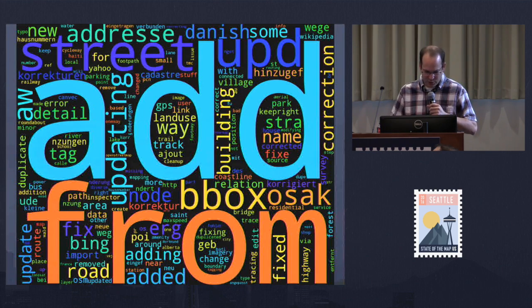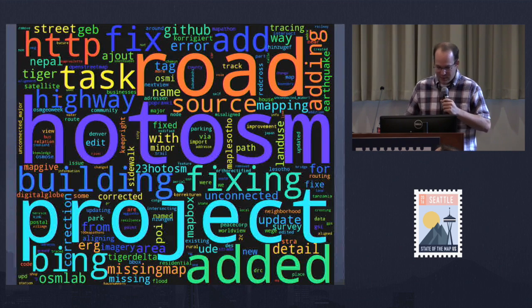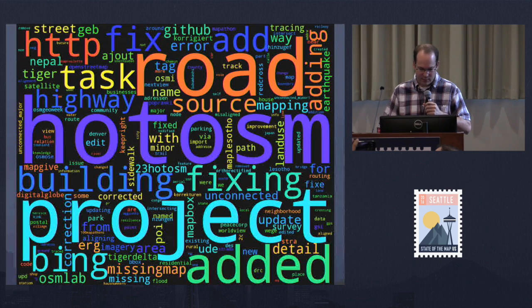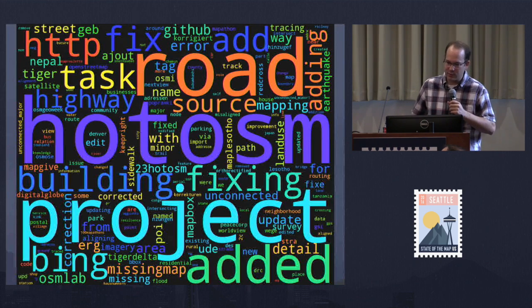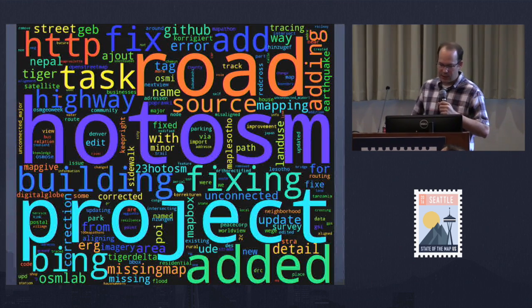Here is the same word cloud for 2015. Apparently HOT has had a significant impact on OpenStreetMap. Bing was actually reduced in prominence by the HOT OSM tag. I think HOT activities encourage you to save often so you don't conflict with other people editing next to you, so it creates a lot of changesets. This count doesn't take changeset size into account — it's just number of changesets.